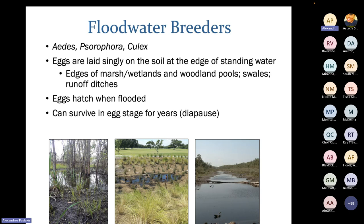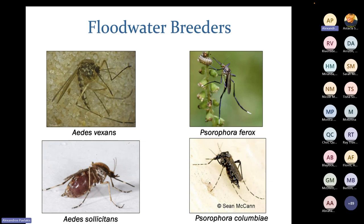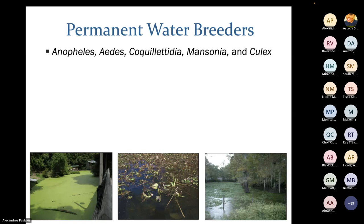We've been seeing large numbers of mosquitoes pop up this year because we had a lot of drought last summer, followed by heavy rain in late fall. These floodwater mosquitoes are known to come out all together at once after large rains and are known for aggressive biting behavior. Floodwater breeders we see around here include Aedes vexans, which we've been seeing at elevated levels recently, as well as Psorophora ferox, Psorophora columbiae, and Aedes solicitans.